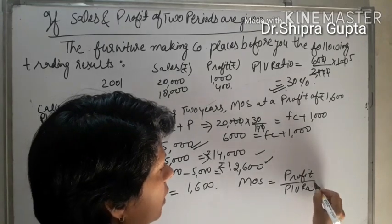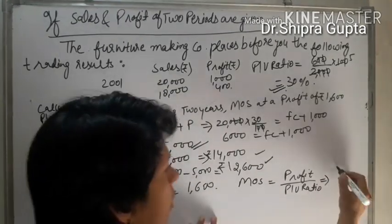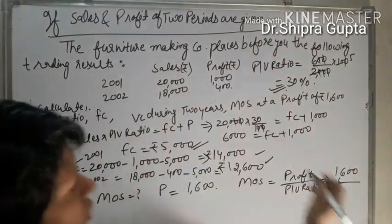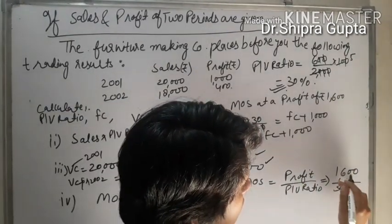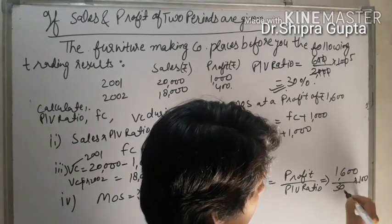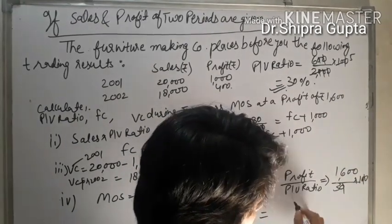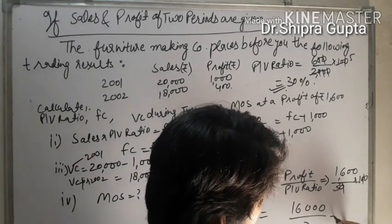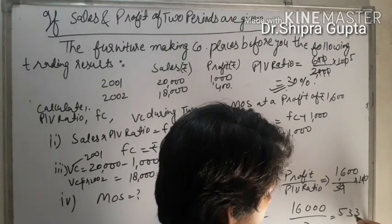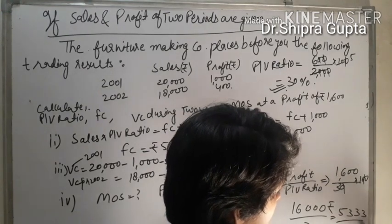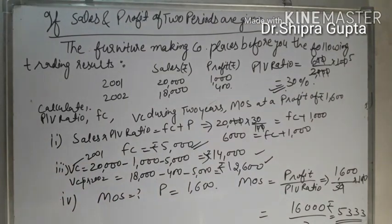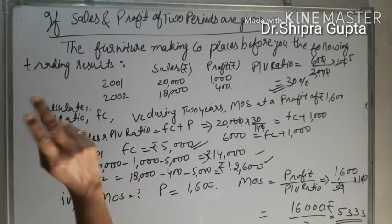We will calculate by this formula: profit 1,600 and PV ratio 30%. So 1,600 upon 3 equals approximately 5,333.33. This answer will come.